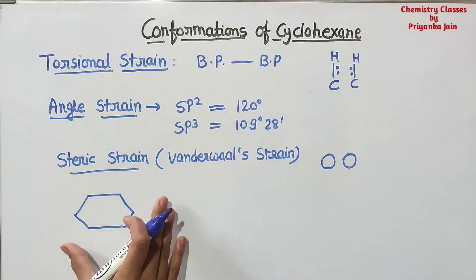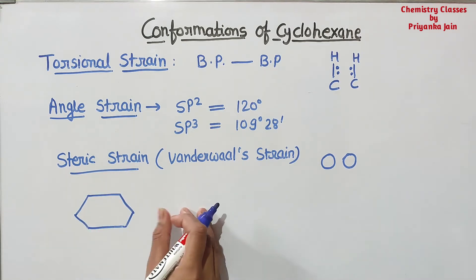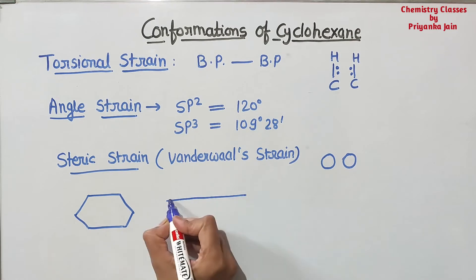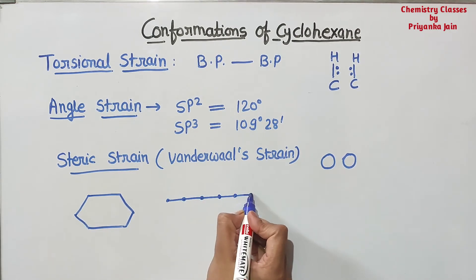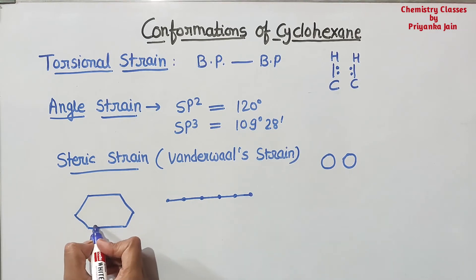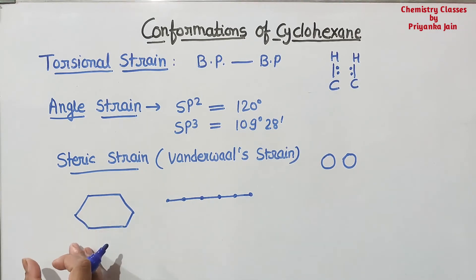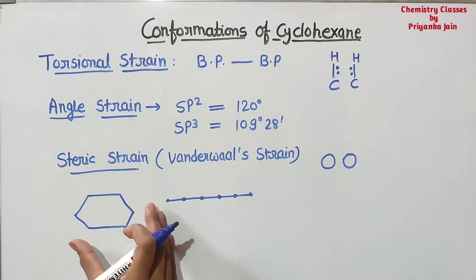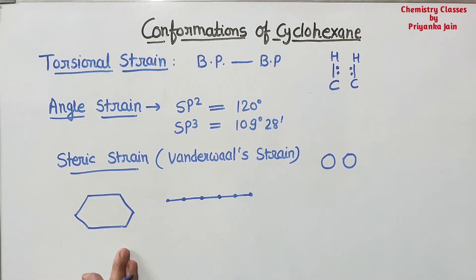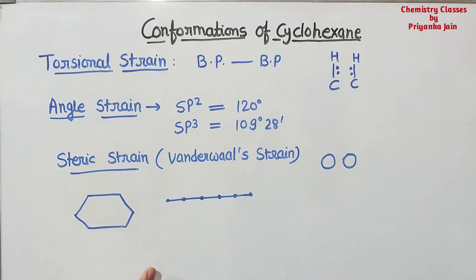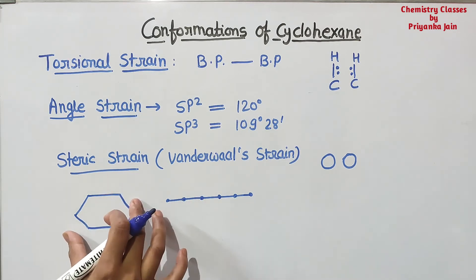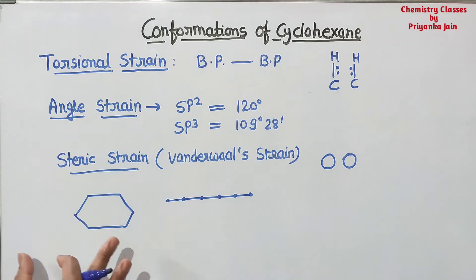We know that whenever a cyclic compound — this type of six-membered ring — is formed, the angle will change. There will be a deviation from the normal angle whenever the cyclic compound is formed. So we can say that in this molecule there should be angle strain present.